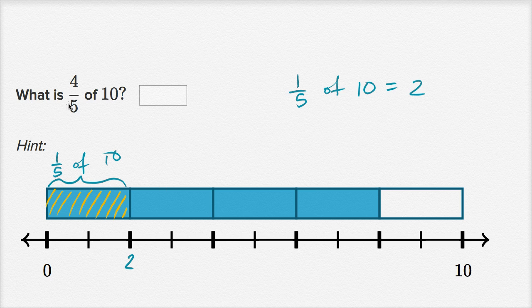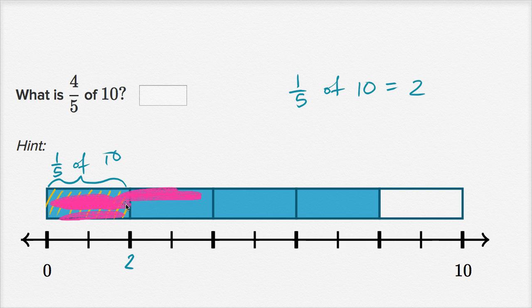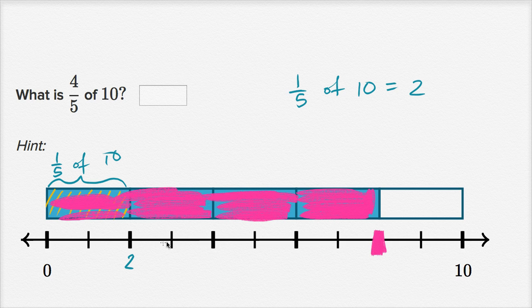Well, they're not just asking us one-fifth of ten — they're asking four-fifths of ten. So this is one-fifth of ten, two-fifths, three-fifths, and we go all the way to four-fifths of ten, which gets us to this number right over there. We see this is zero, one, two, three, four, five, six, seven, eight. So it's the number eight. Four-fifths of ten is eight.